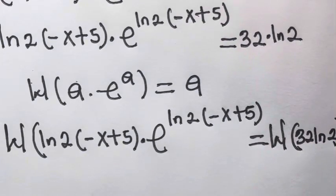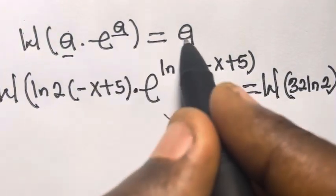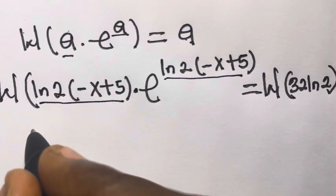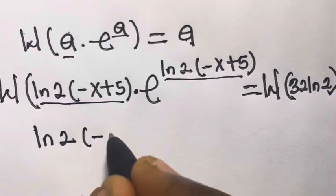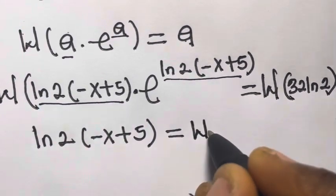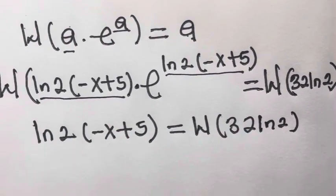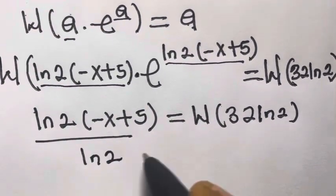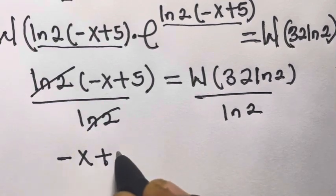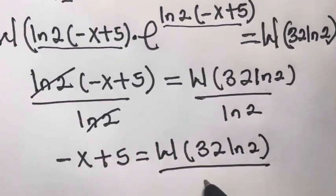From here, we observe that when the Lambert W function base and the power are the same, you choose that value. So looking here, we have ln(2) times minus x plus 5, and the Lambert W of this equals ln(2) times minus x plus 5. So that equals Lambert W of 32 times ln(2), divided by ln(2), so that the ln(2) cancels, leaving us with minus x plus 5.